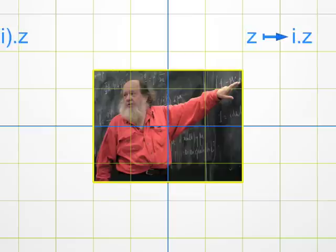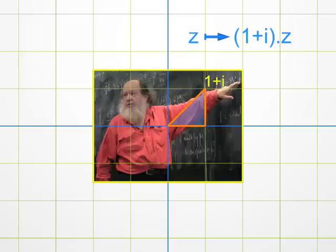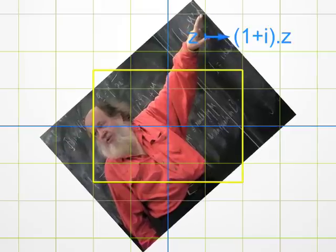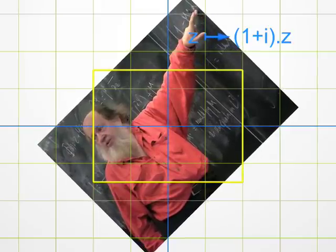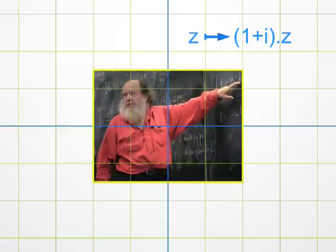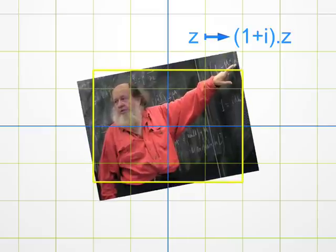Well, a bit more complicated. Multiplication by 1 plus i. Look at the complex number 1 plus i. It corresponds to the point with abscissa 1 and ordinate 1. Its argument is 45 degrees, and its modulus is the square root of 2, using Pythagoras' theorem. Hence, a multiplication by 1 plus i amounts first to multiplying the modulus by the square root of 2, and then to adding 45 degrees to the argument. In simple words, one has to combine a homothety and a rotation. This is called a similarity.